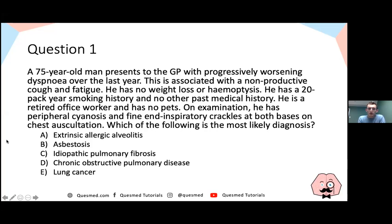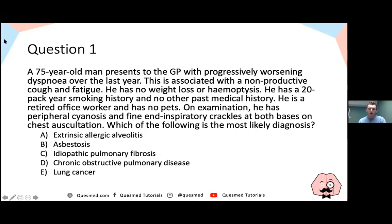Question one: A 75-year-old man presents to the GP with progressively worsening dyspnea over the last year, associated with a non-productive cough and fatigue. He has no weight loss or haemoptysis, a 20 pack-year smoking history, no other past medical history, is a retired office worker, and has no pets. On examination he has peripheral cyanosis and fine end-inspiratory crackles at both bases. Which of the following is the most likely diagnosis?